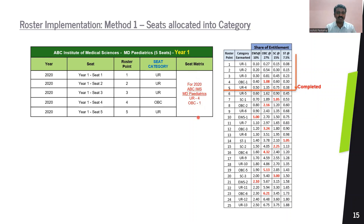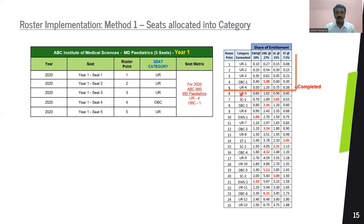In the MCC seat matrix, this institute will have four UR seats and one OBC seat. There will be concerns like no SC seat available, no ST seat available, not even one EWS seat available. The roster works that way. In the next five seats allotted in the next year, you may be able to get a seat under your category. But for the first year, if there are five seats, you will have only four UR seats and one OBC seat.